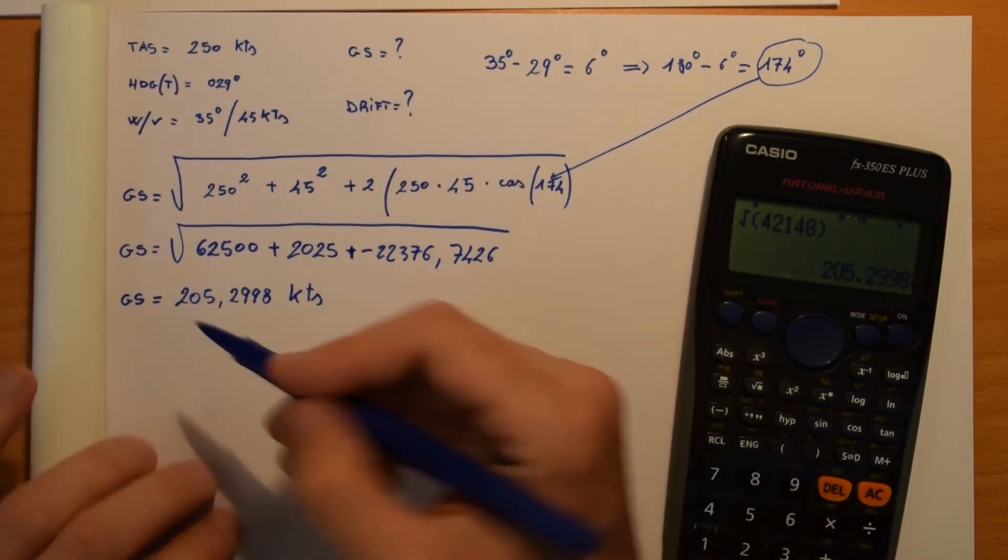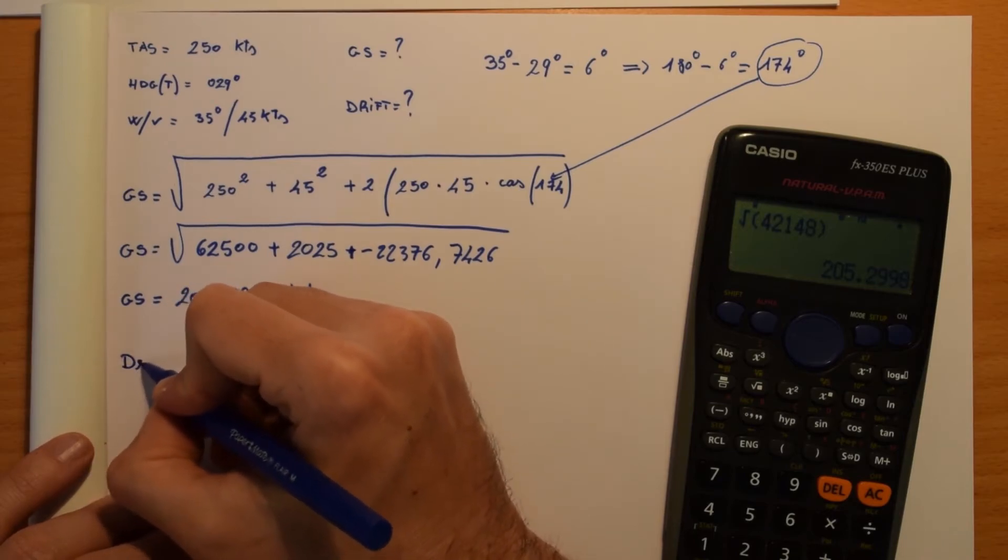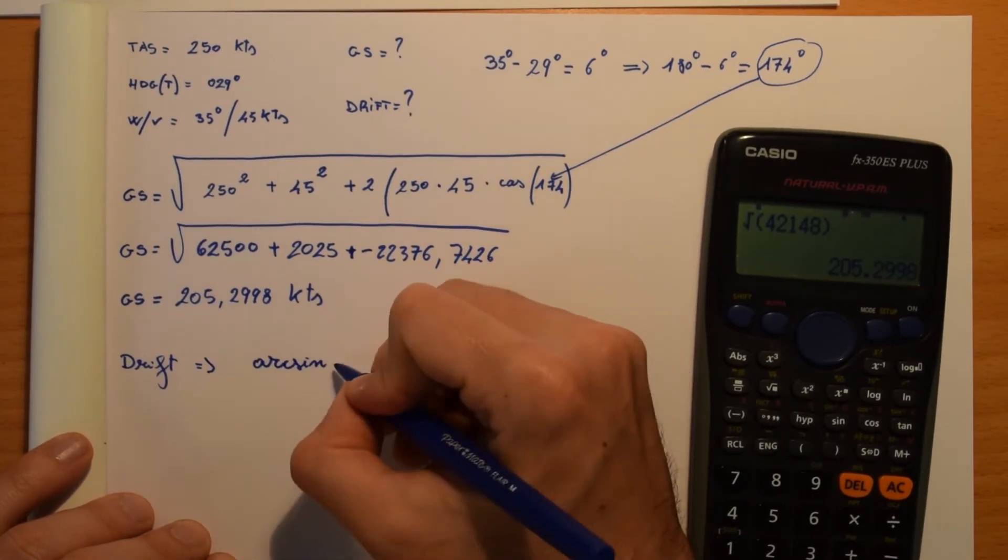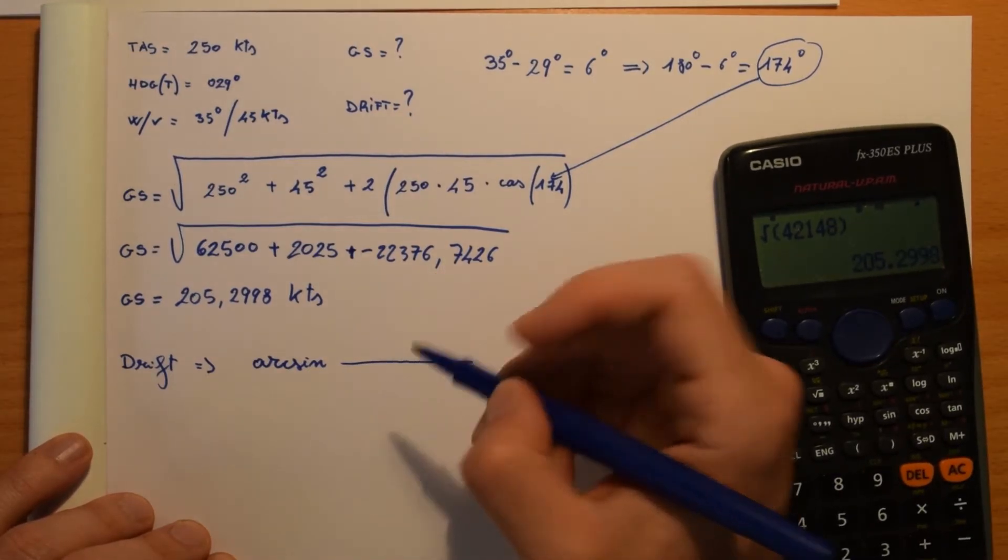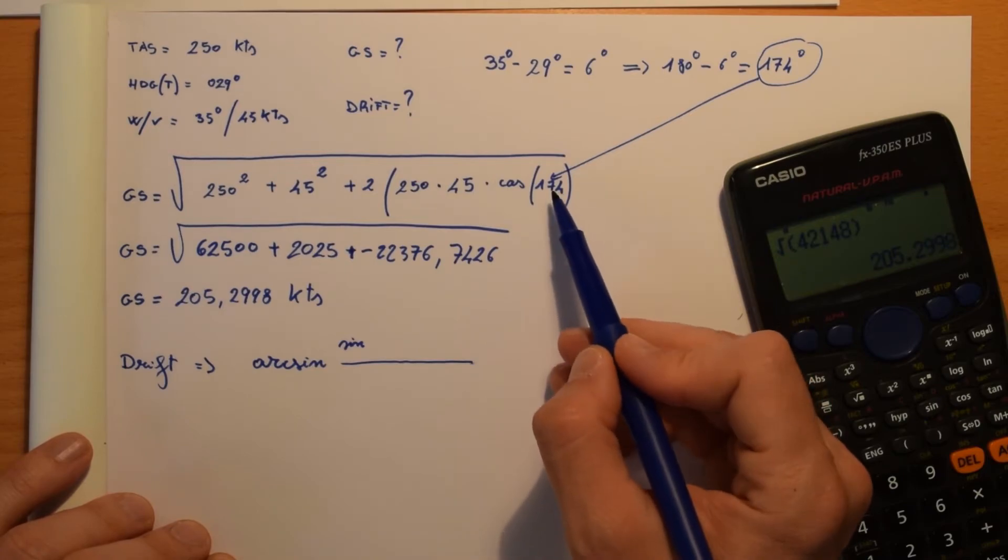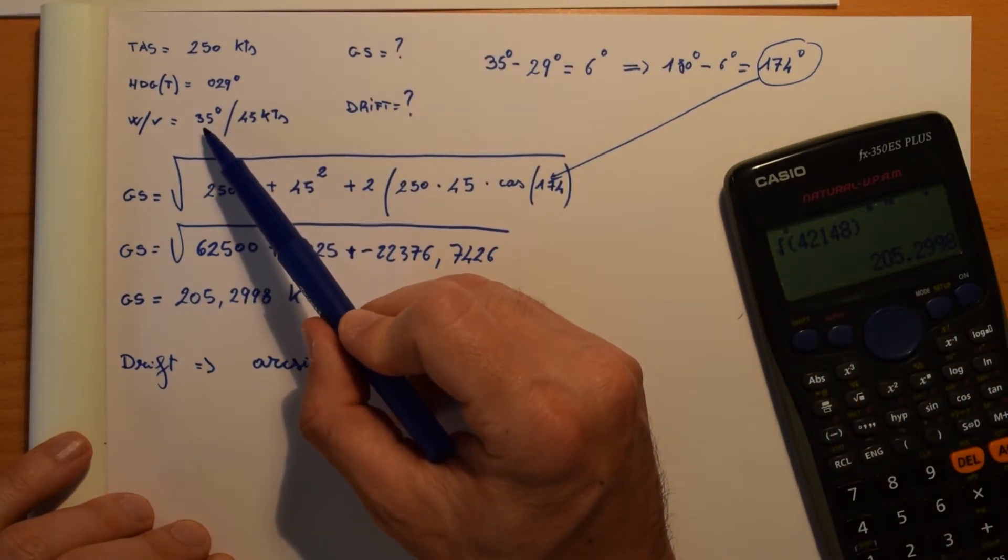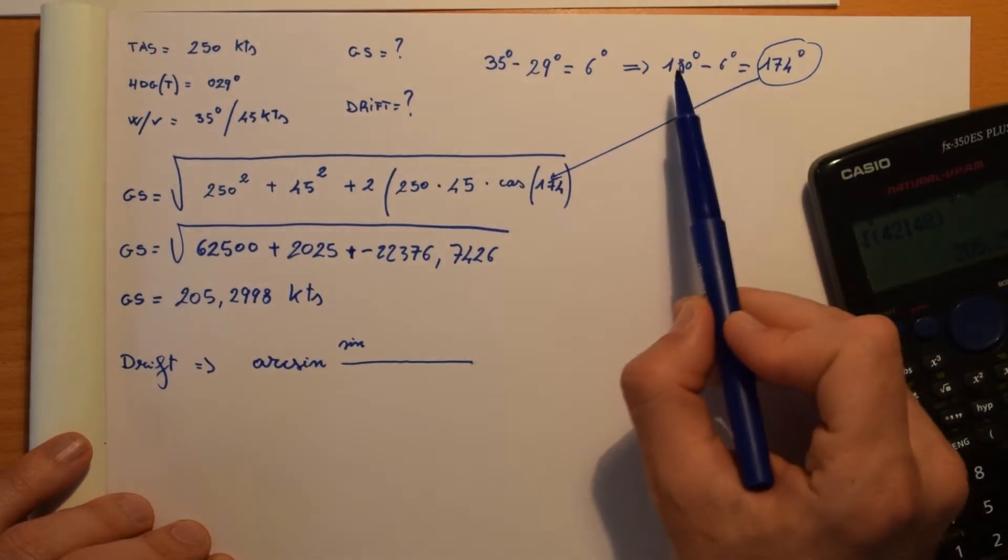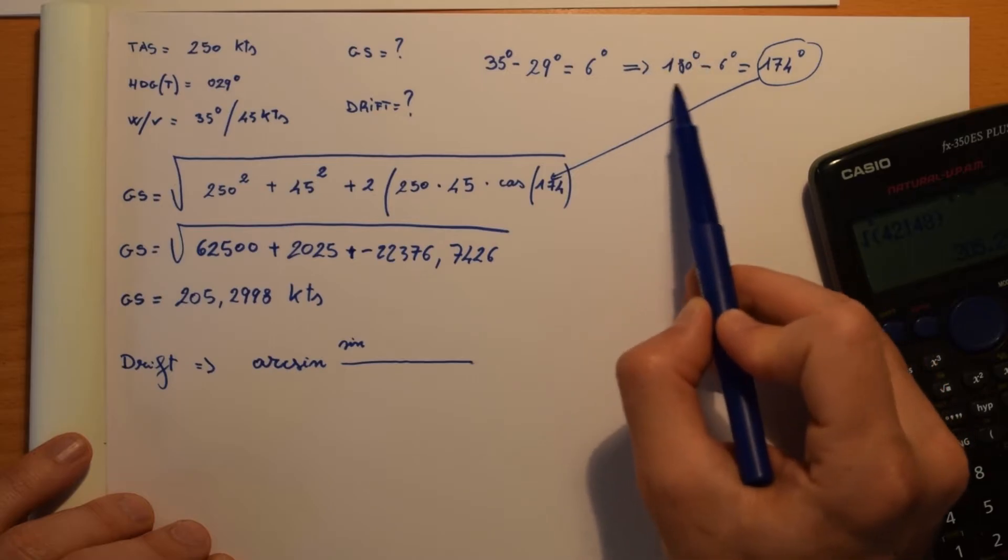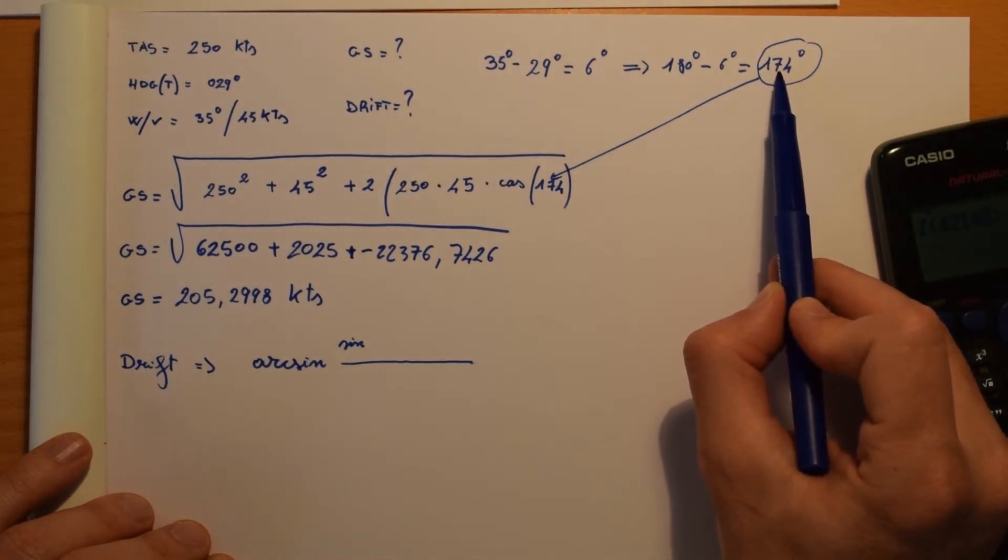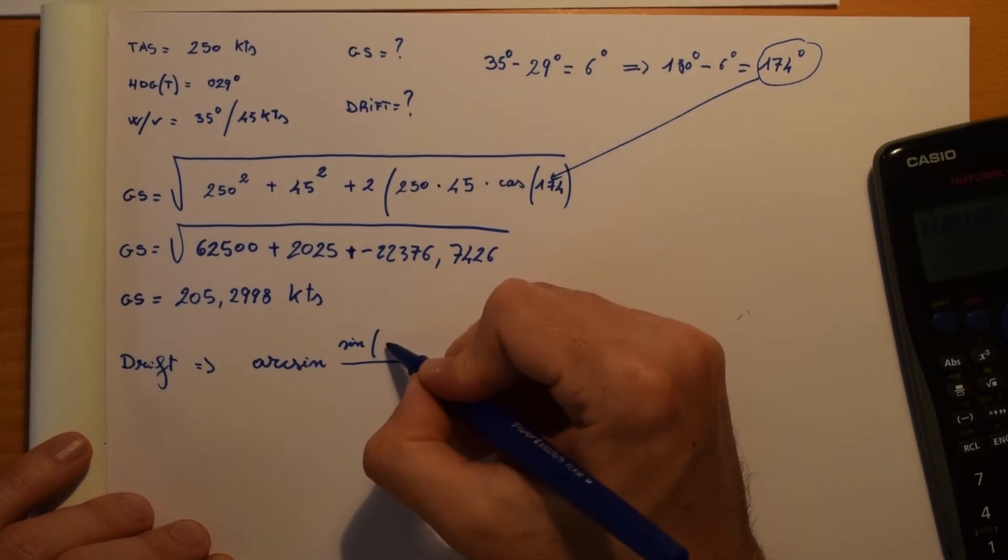Drift problem is easier. So in order to get the drift, the operation is this one: it's an arc sine of this operation. We're going to take the sine of the number we got, so just to remember, we got 174. Just taking our degree of the wind vector, 35, then we took 29, we subtract the values, we got 6, and then we took 180 (this is a fixed value, it's always this one we have to take) minus 6. And the result was 174, so this time we're going to get the sine of 174.